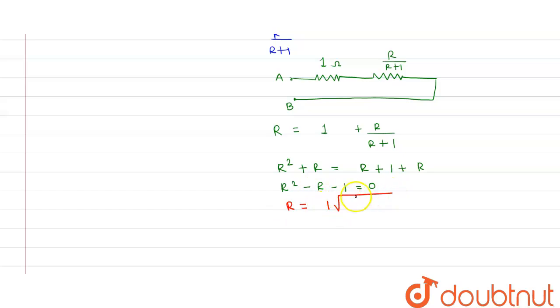So minus minus will become plus under root of A is 1. So this will be plus 4 upon 2.